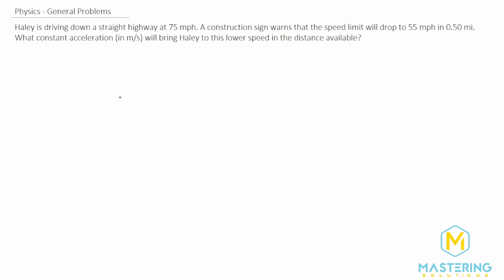Welcome to Mastering Solutions. In this problem, Haley is driving down a straight highway at 75 miles per hour and a construction sign warns her that the speed limit will drop to 55 miles per hour in half a mile. What constant acceleration in meters per second squared will bring Haley to this lower speed in the distance available?